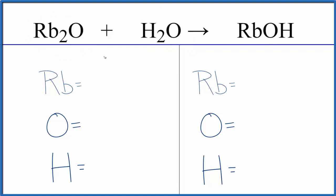To balance it, let's count the atoms up. Two rubidium, we have one oxygen, but don't forget this one oxygen right here. So we have two oxygen atoms on the reactant side and we have these two hydrogen atoms. Product side: one rubidium, one oxygen, and one hydrogen.